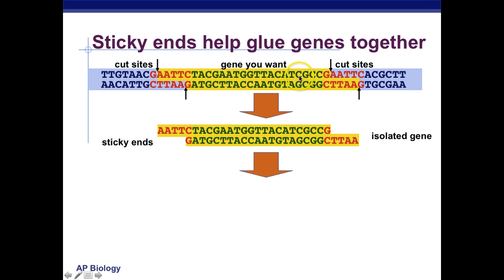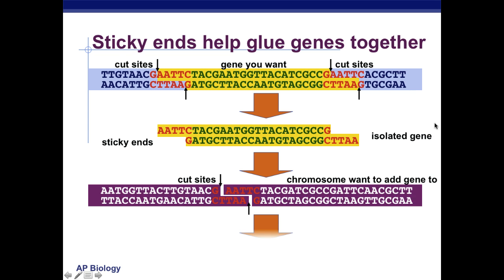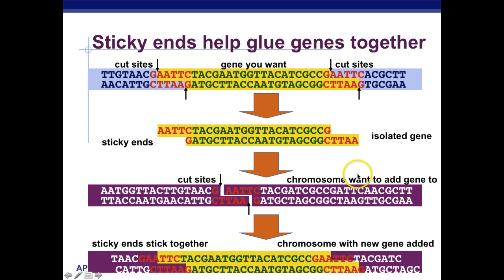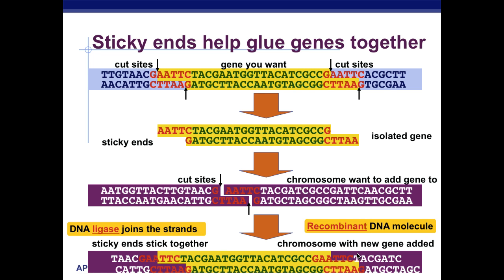We're cutting out the gene we want and isolating it, leaving sticky ends. Then we're cutting the chromosome of the bacteria we want to insert the gene in. We add the gene, bind it together using ligase, and now we've formed a recombinant DNA molecule.